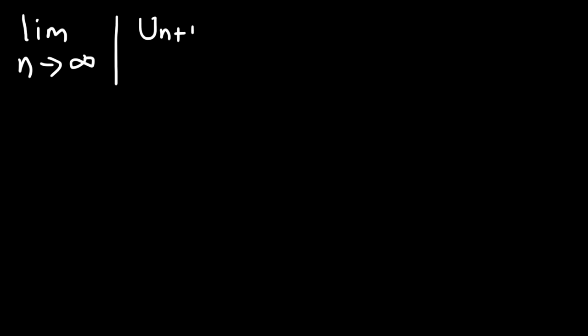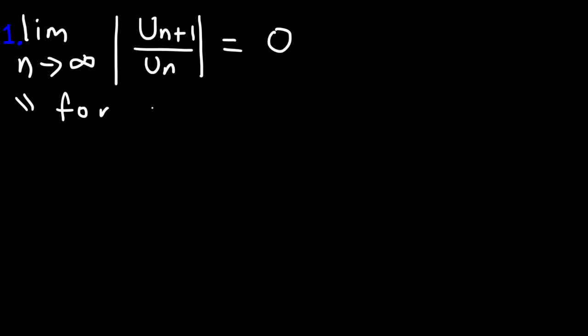The next thing we need to be able to do is determine the radius of convergence and the interval of convergence of a power series. You need to use the ratio test to do that. Take the limit as n goes to infinity of u sub n+1 divided by u sub n. There are three scenarios. If the ratio test gives 0, then the series converges for all x values — it's always convergent. So the radius of convergence R equals infinity.